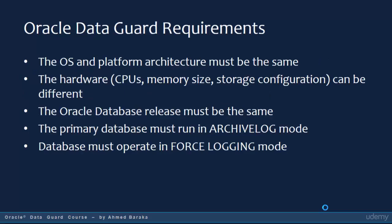When you want to configure an Oracle Data Guard, the operating system and the platform architecture must be the same for the primary database and the standby database. However, the hardware like the CPUs, memory size, and storage configuration can be different. The Oracle database release must be exactly the same. If you are using release 12.1.0.1 for the primary database, the Oracle database release in the standby database must be exactly the same.